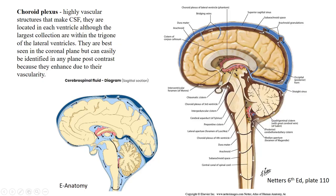Here are images of the choroid plexus, which lives in the floor of the lateral ventricles, in the roof of the third ventricle, and in the floor of the fourth ventricle. It also lives within the trigone area, and because these are midline images it's hard to see that here. We'll look at that later in a coronal view, where you'll see that the trigone area contains the majority — or largest grouping — of choroid plexus.